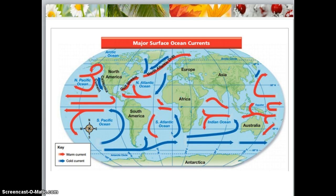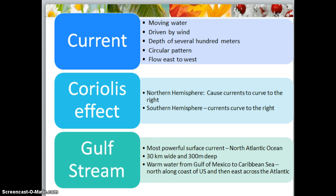When we talk about ocean currents, what are we talking about? Ocean currents are moving water and it's driven by wind. The wind is able to move water that reaches depths of about 100 meters. Currents go in a circular pattern, very much like how magma moves in a circular pattern when we talked about convection. The warm water will push the cold out of the way, the cold will warm up and move, making that convection-type current.